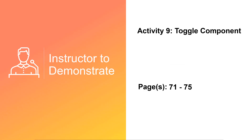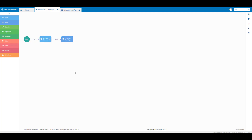In this activity I will demonstrate how to create a toggle component and also go through the steps of creating a new page condition. On the Boomi Flow build canvas we're going to click on the employee app page tab to go back to the page layout.